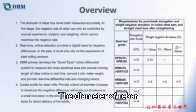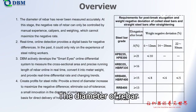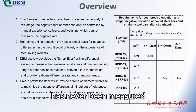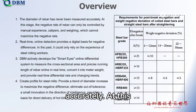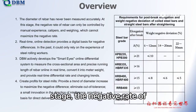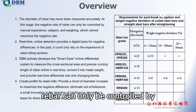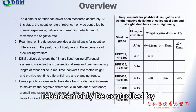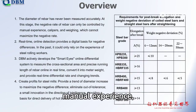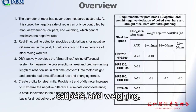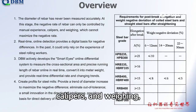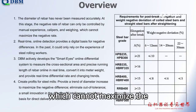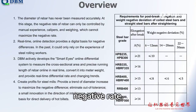The diameter of rebar has never been measured accurately. At this stage, the negative rate of rebar can only be controlled by manual experience, calipers, and weighing, which cannot maximize the negative rate.